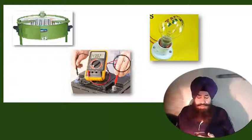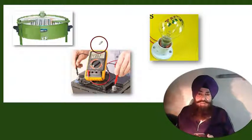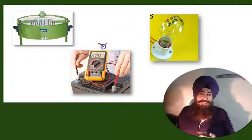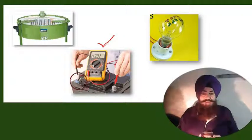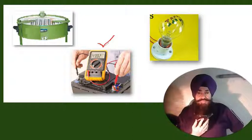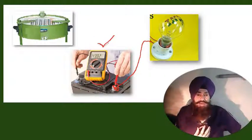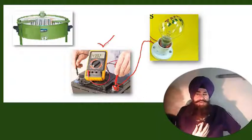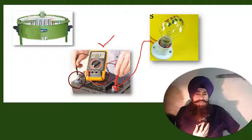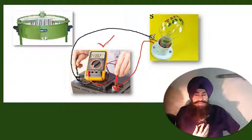Now, if we connect this voltage source — let's say it has a value of 100 volts — and we are measuring voltage with the multimeter, then we connect this voltage source to a bulb. The filament will heat up and keep the light on.